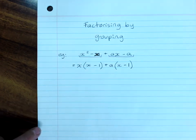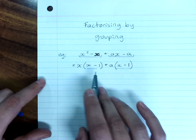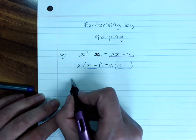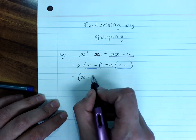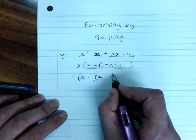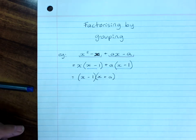We got the same thing in the brackets and now it's doing what we did before. This is the HCF now between these two terms. Take that out the front and put the remaining factors in the brackets. So you have factorized by grouping.